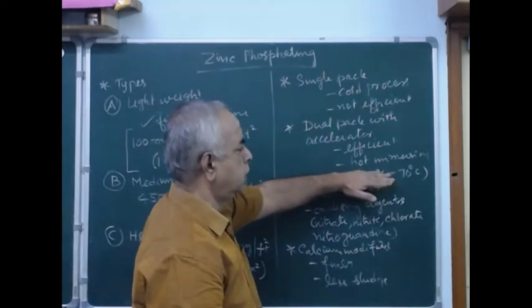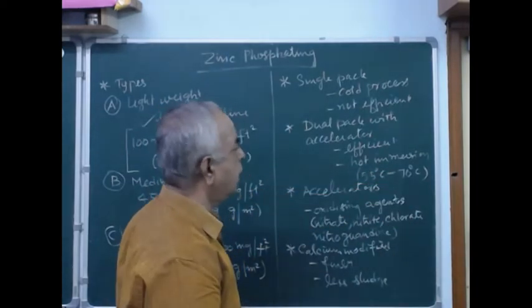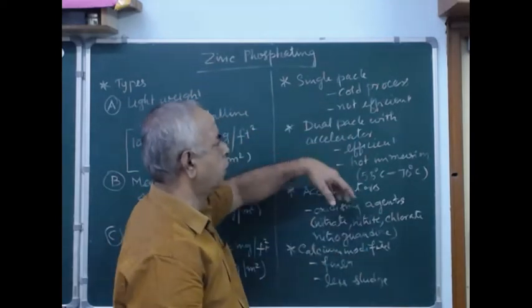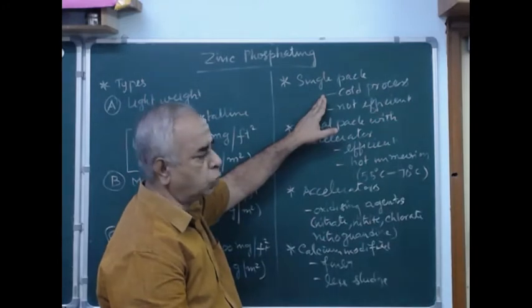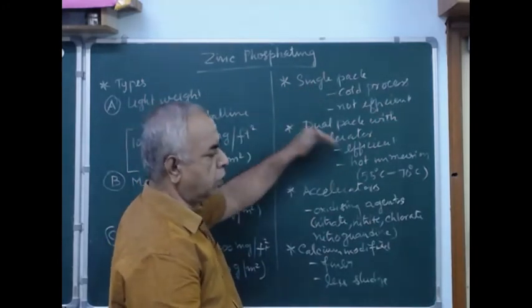Of course, heat energy is required around 50 to 55 to 70 degrees centigrade. But that is the ideal phosphating. As the current process is concerned, it will take a longer duration and it is not so efficient as dual pack.